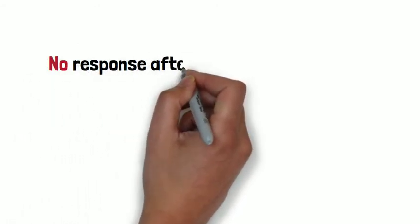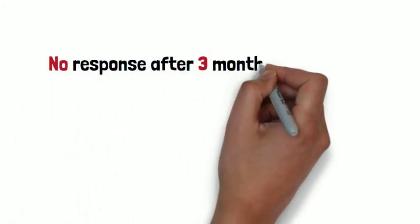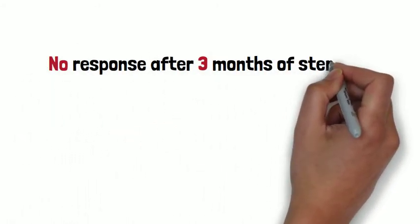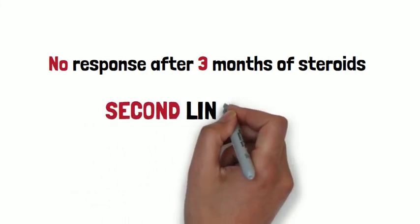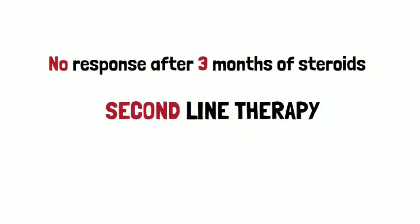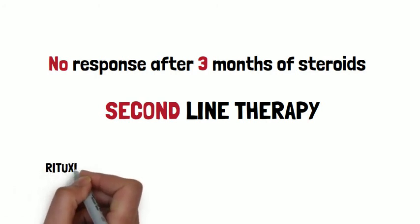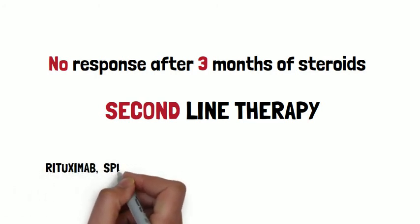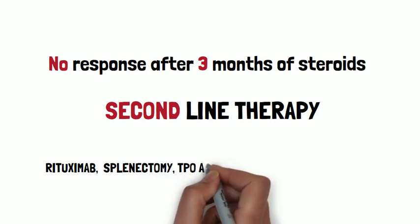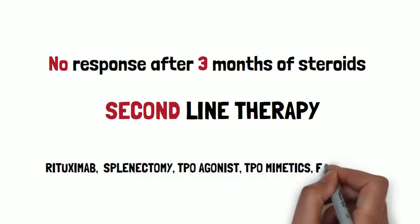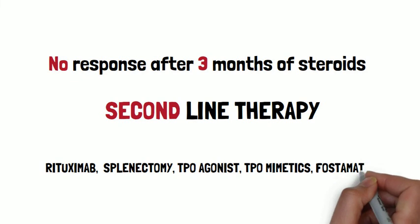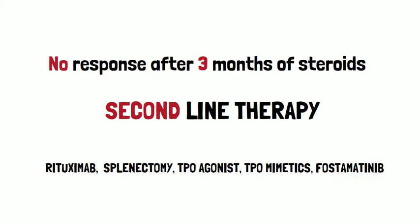If patients don't respond to 3 months of first-line therapy, second-line therapy must be initiated. Excessive use of glucocorticoids is a common error in ITP management. The second-line therapies include rituximab, splenectomy, TPO receptor agonists, TPO mimetics, and fostamatinib.